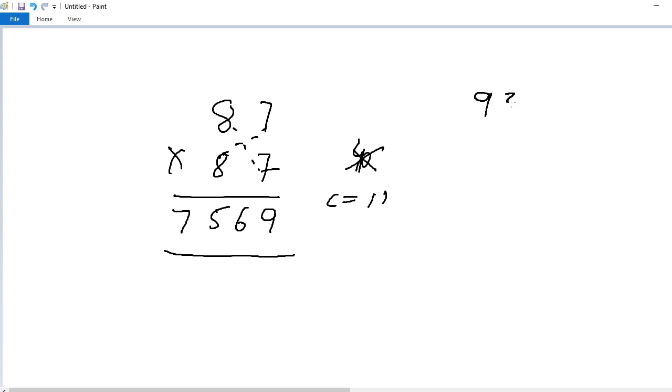Similarly, 93 into 93. First step 3 into 3, 9. Cross multiplication 3 into 9, 27 plus 27, 54 carry 5. 9 into 9, 81 plus 5, 86. 8649 is the answer.